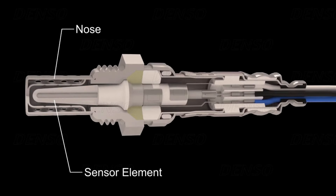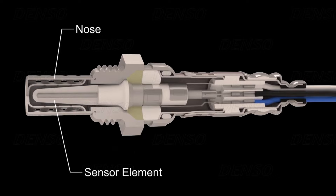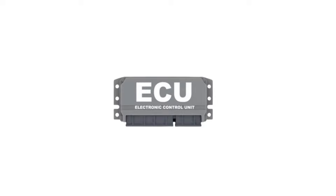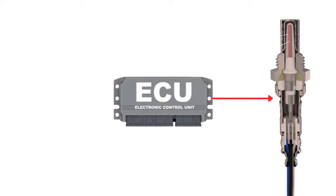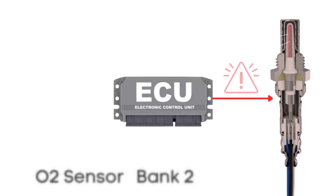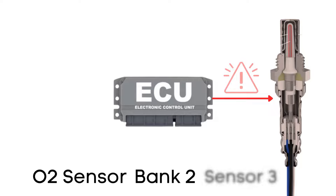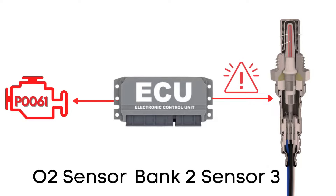That's where the heater circuit comes in. It's designed to warm up the sensor quickly so it starts working sooner. The ECU regularly checks the heater circuit in the oxygen sensor to ensure it's functioning correctly. If it finds that the resistance in the heater circuit for bank 2 sensor 3 is out of the specified range, it will trigger the P0061 code.